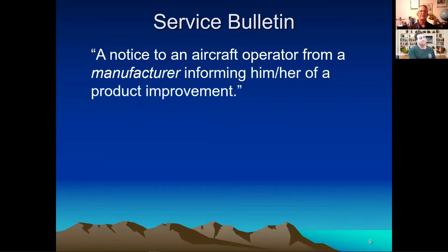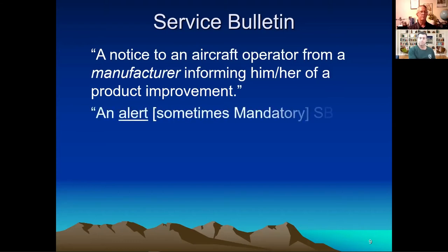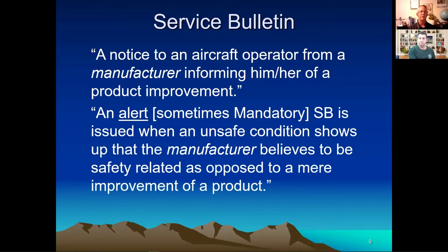A service bulletin comes from the manufacturer of whatever it is — the aircraft, engine, propeller, or appliance. It informs you as a registered owner of a component that there's a product improvement: 'We think your airplane or radio will be better if you comply with this service bulletin.' It's a good idea to sign up for these or find them when others reference them. They sometimes come in an alert format — sometimes called a mandatory service bulletin — issued when the manufacturer determines there's an unsafe condition.